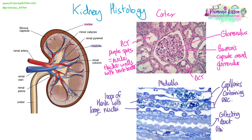Then we have a collecting duct, which you can tell is different from the others because it has much thicker walls. The capillaries have very thin walls — you can barely see them — and you can see the red blood cells inside with their classic biconcave shape. The collecting duct has thick, bumpy walls where nuclei are visible in some cells. The loop of Henle has thinner walls than the collecting duct, with large nuclei that stick out into the lumen.